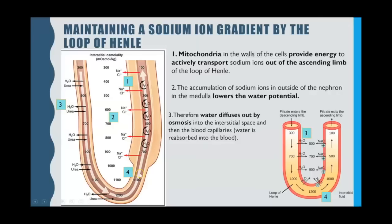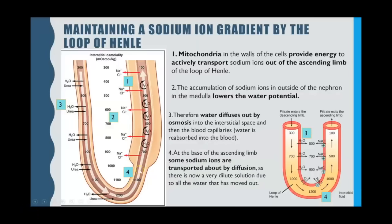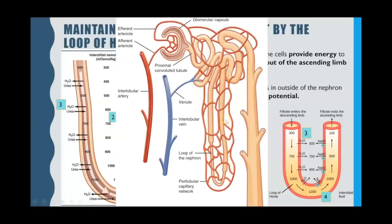At the very base of the ascending limb, because there is now a very dilute solution with a very low concentration of sodium ions at the base, some of the sodium ions move out by diffusion. The nephron then progresses from the renal capsule, proximal convoluted tubule, loop of Henle, to the distal convoluted tubule and collecting ducts.